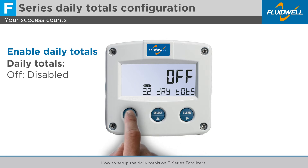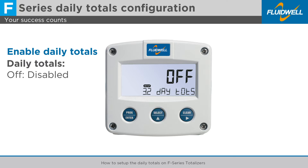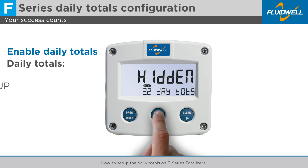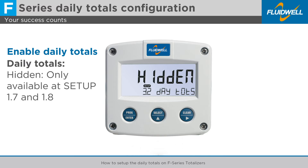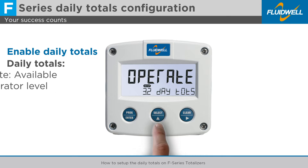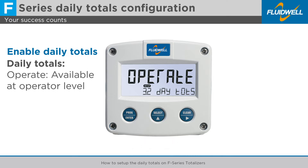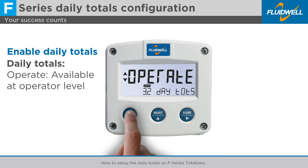Press prog to change this setting. Press select to see the settings: Off — daily totals disabled; Hidden — daily totals are only available at setup 1.7 and 1.8; Operate — daily totals are available at operator level. Press prog to store this setting.